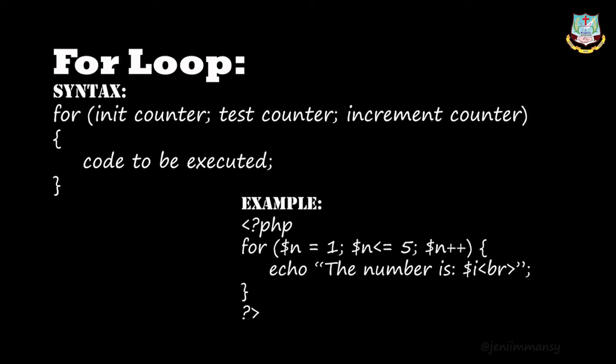From 1 to 5 we need, so the initialization value is n equal to 1. The next one is test counter — it is a condition. Till 5 we need, so we give n less than or equal to 5. Or you can give n less than 6, which gives values up to 5. This test counter is evaluated for every iteration.